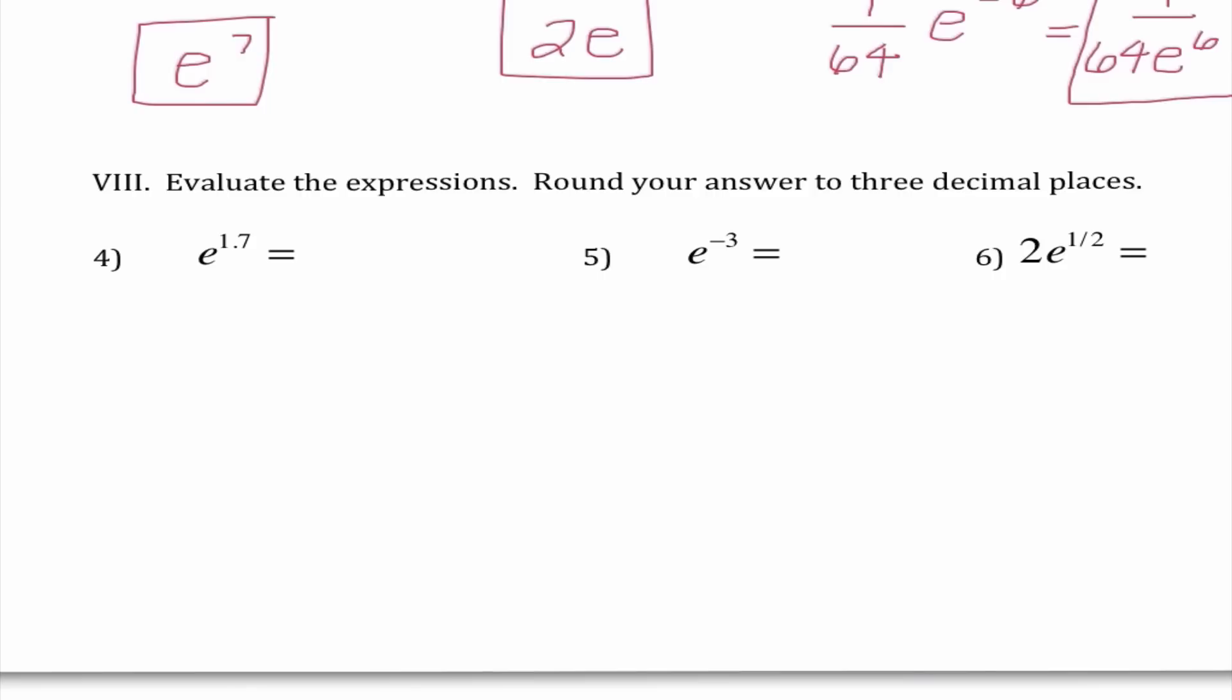So I end up getting 1 over 64E to the sixth power because when I need to make an exponent positive, I know I bring it down to the denominator. Our next problems tell us to evaluate the expressions and round our answer to three decimal places. So for number four, when I'm putting E to the 1.7 power into my calculator, my key sequence, first I need to press second and then LN. When I press second LN, that gives me the button that is E to the X. And all E to the X means is that it's going to give me E and I need to fill in the power.